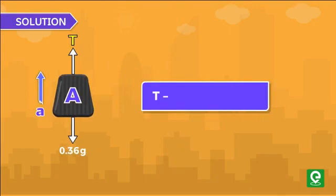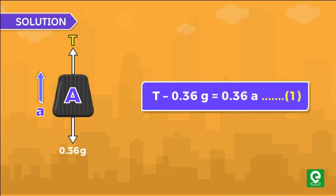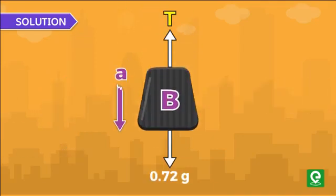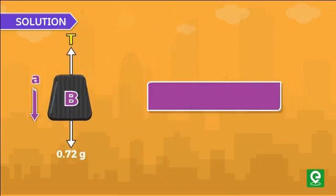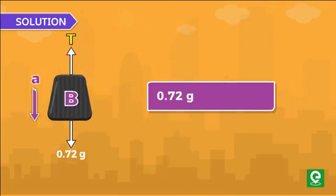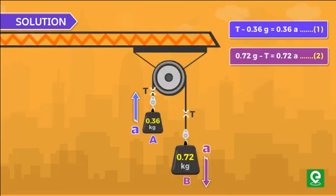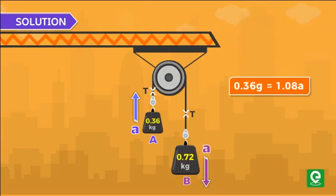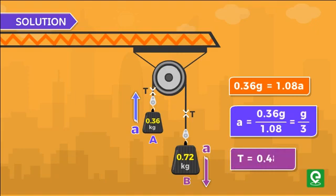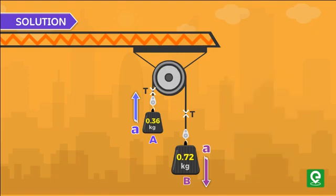Let's call this equation 1. Similarly, for block B we can write 0.72g minus tension equal to 0.72a. Let's call this equation 2. By adding and subtracting equation 1 and 2, we get acceleration a equal to g by 3 and tension T equal to 0.48g.